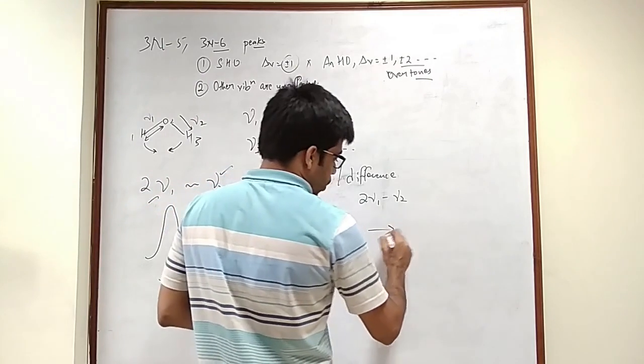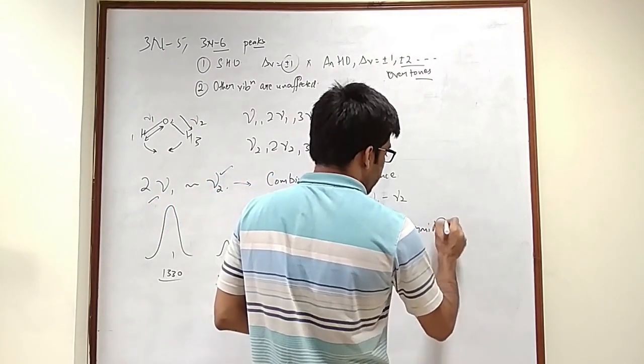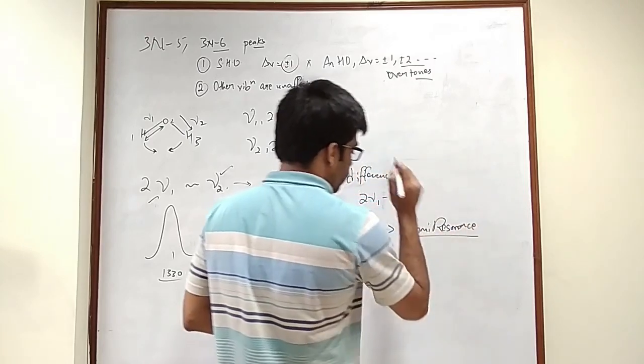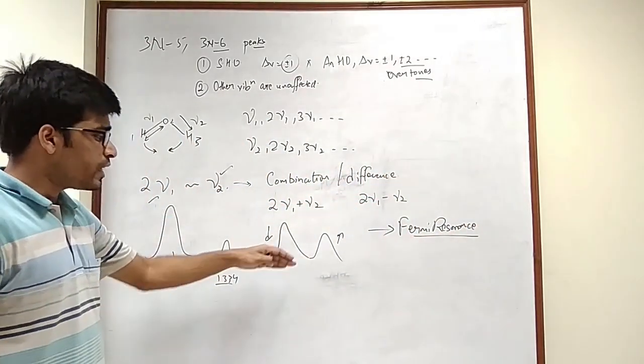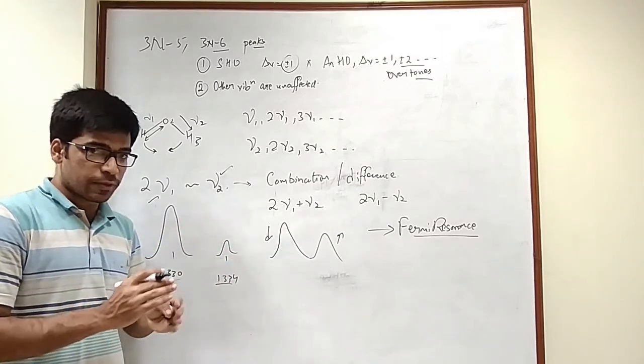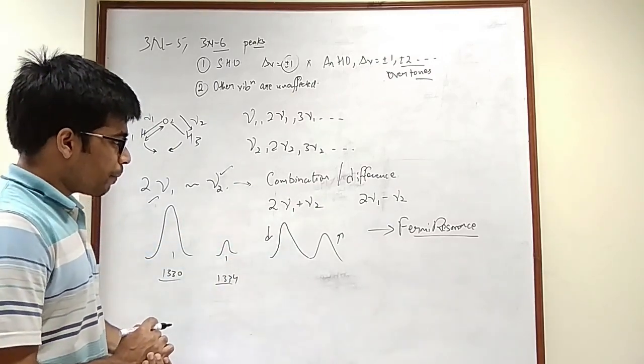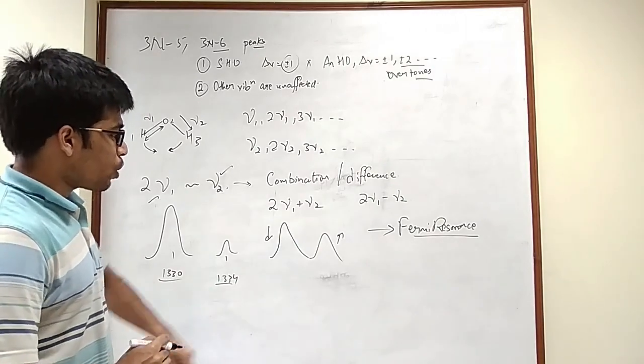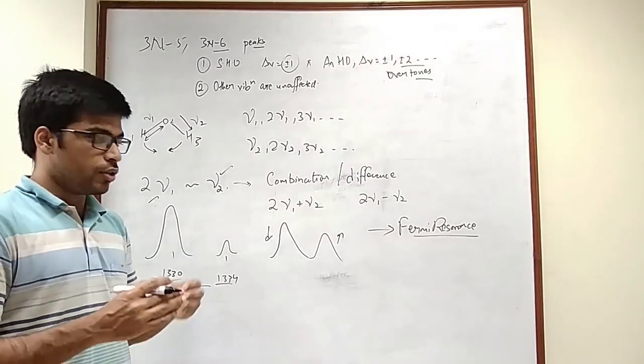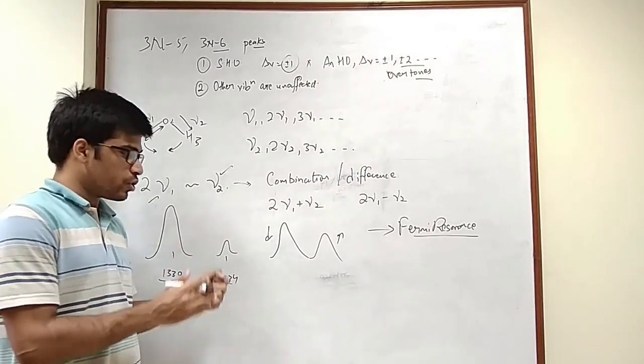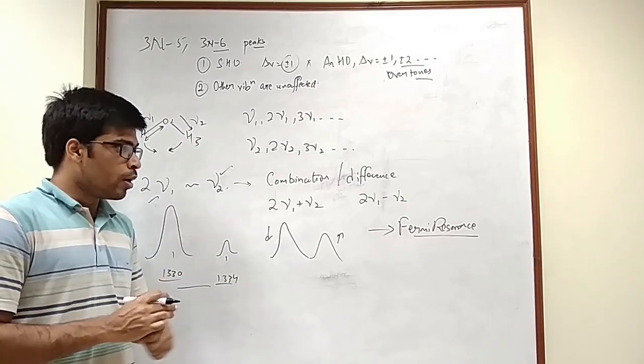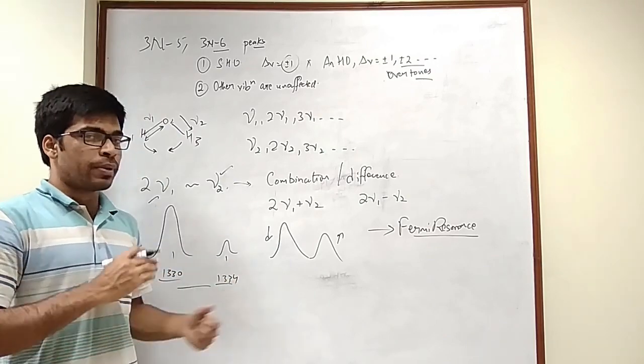And this phenomenon is known as Fermi resonance, where an interaction between the two different peaks leads to some exchange of intensity. This is not always the case that this is going to happen, but the case of CO2 is a very intensified case which is occurring in most of the, in this molecule but not necessarily this is going to happen every time.